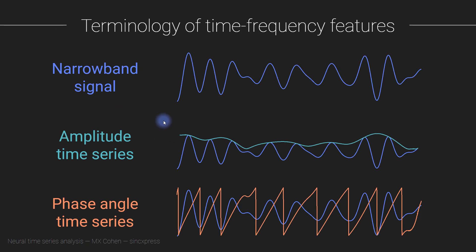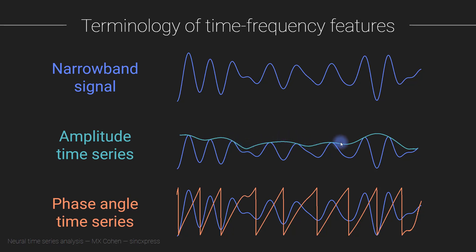Here is a quick reminder of the different kinds of information that we want to extract from narrowband signals. We want to extract the narrowband filtered signal itself — the filtered version of the real broadband signal. Then we have the amplitude time series, which is like an envelope resting on top of the faster wiggles from the narrowband signal. You could also square the amplitude time series to give you the power time series. The difference is that the power time series will highlight the most salient features at that frequency, whereas the amplitude time series will highlight the more subtle features.